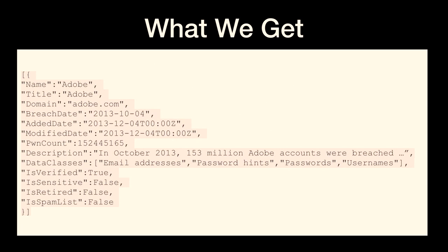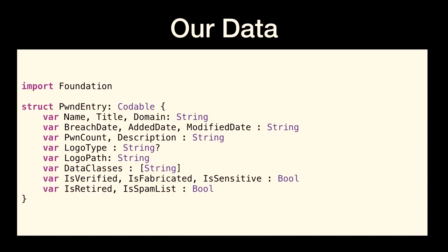We're going to get back an array of dictionaries from Have I Been Pwned and we don't want to write a parser for all that. So I create a Swift class called PwnedEntry with a field for each one of the fields in the JSON. The 'logoType' field has a String? — a String optional — because that particular field doesn't always appear in the JSON. I make this class derive from Codable, and I'm done. As long as I get the expected JSON response back, it is almost zero work to get that data into this class.